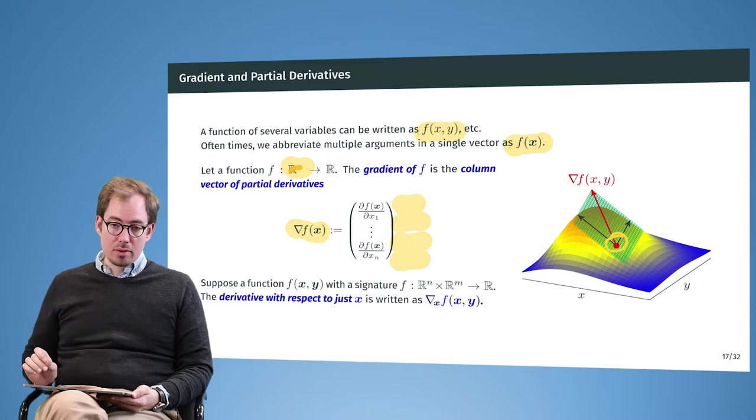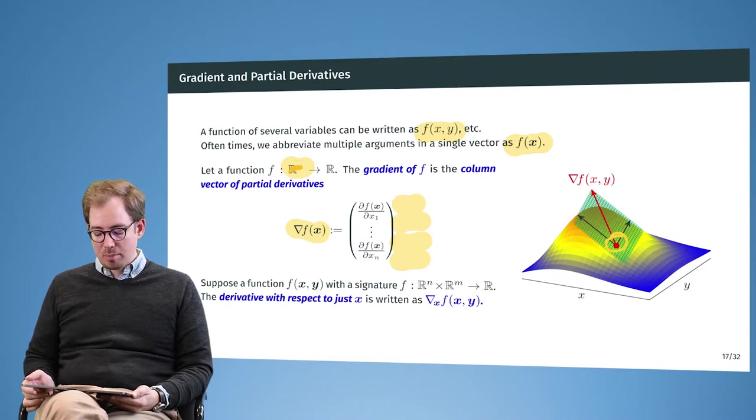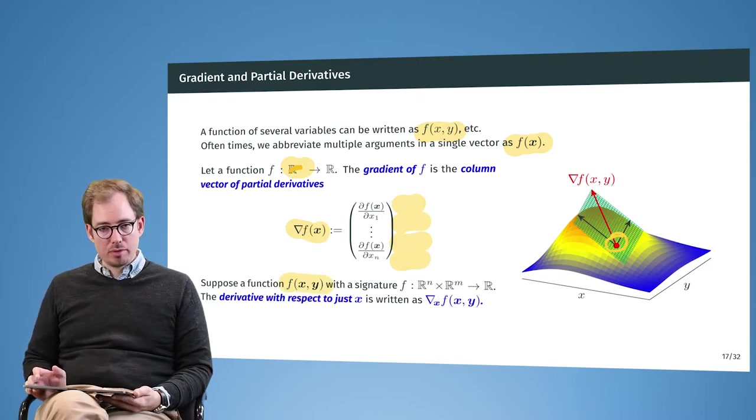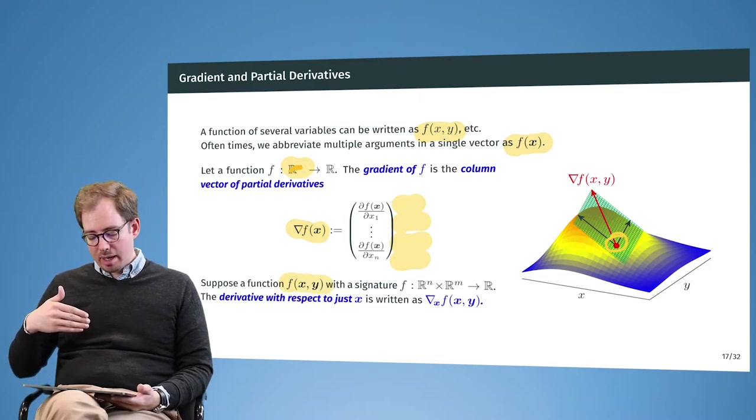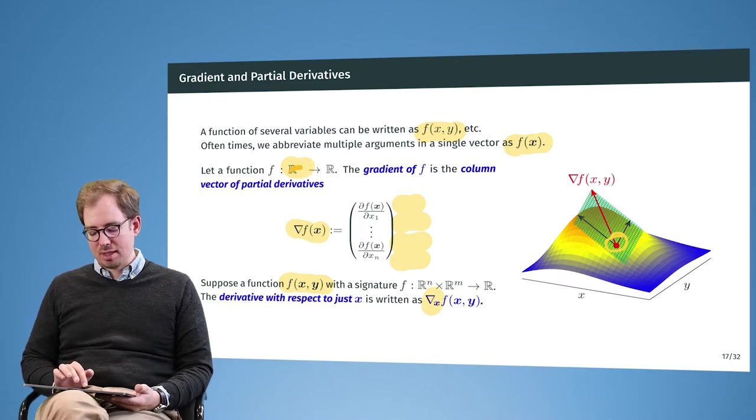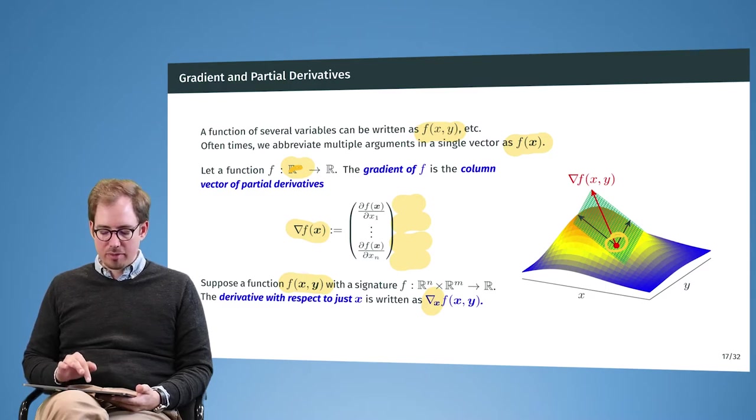And we have also the notation to take the gradient to just a subset of the input. So if you have a function f that takes two vectors as input, for example, we can take the derivative to just the first input vector. And here this is then expressed as grad f to grad x of f.